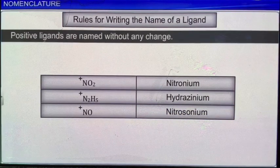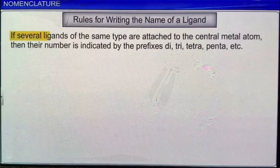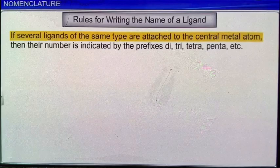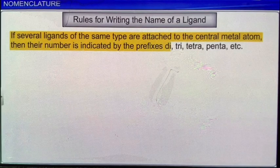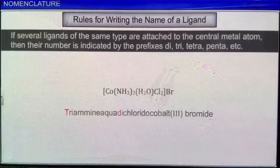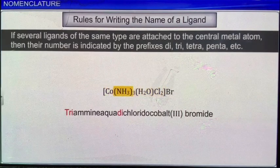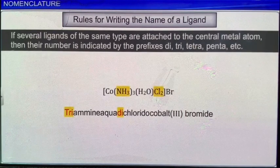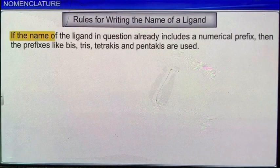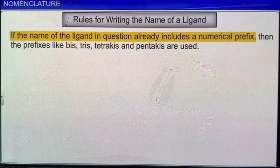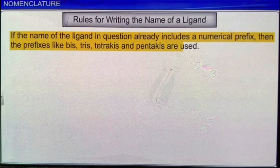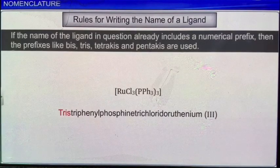Another rule says that if several ligands of the same type are attached to the central metal atom, their number is indicated by the prefixes di, tri, tetra, penta, etc. For example, in the complex [Co(NH₃)₃(H₂O)(Cl)₂], the three amine and two chloride ligands are indicated by the prefixes tri and di respectively. However, if the name of the ligand already includes a numerical prefix, then the prefixes bis, tris, tetrakis, and pentakis are used. For example, the complex [RuCl₃(PPh₃)₃] is named as tris(triphenylphosphine)trichlorido-ruthenium(3).